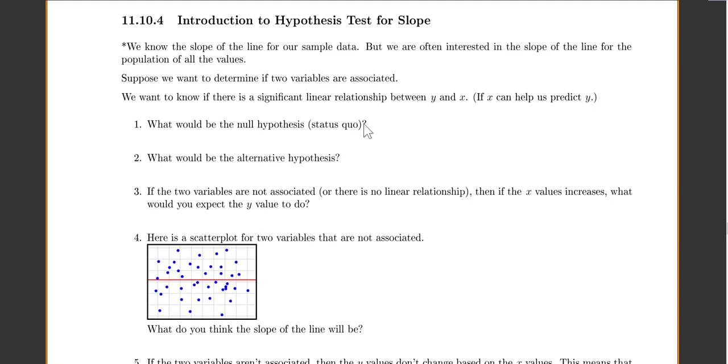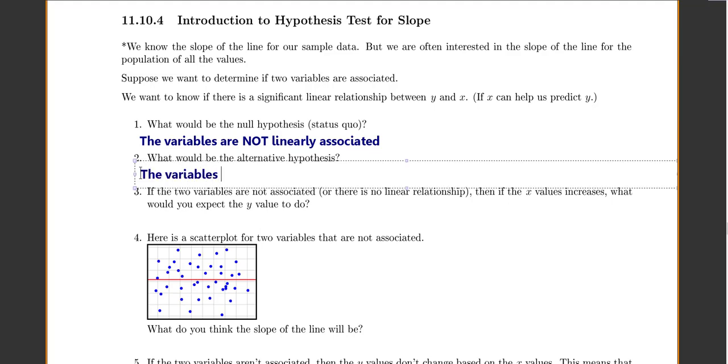So what would be your null hypothesis? I would think is that they are not linearly related, or they're not associated in any way. The null hypothesis would be the variables are not linearly associated. And then the alternative, what you would be hoping to show, is that the variables are linearly associated.